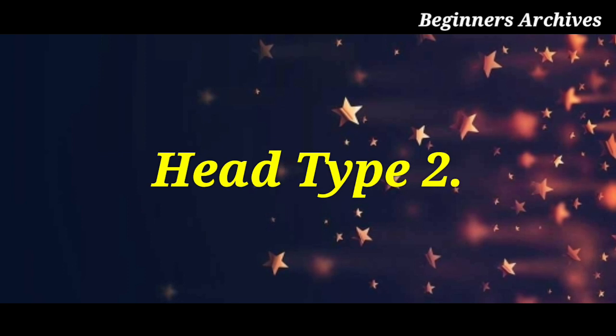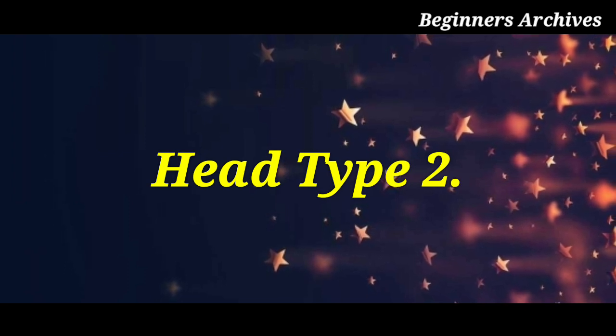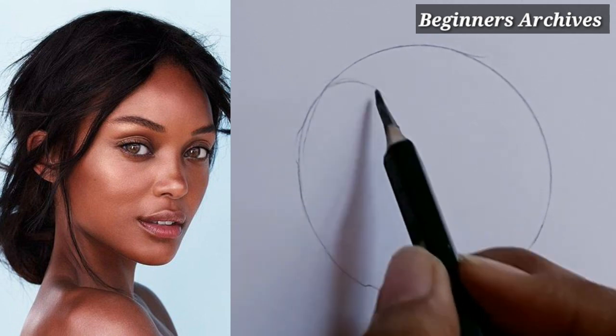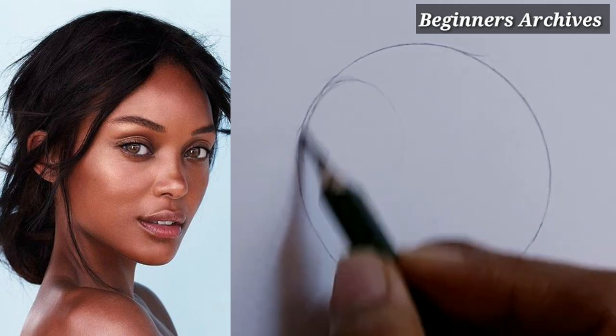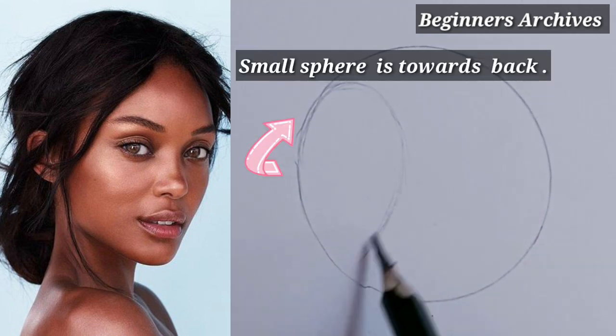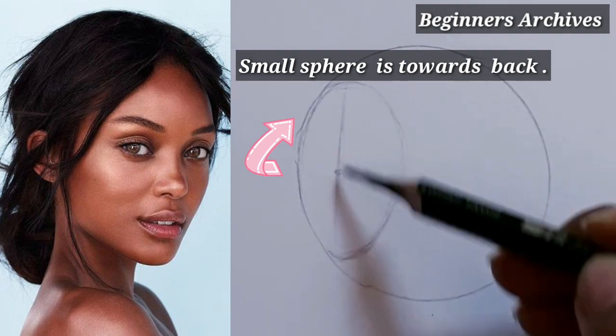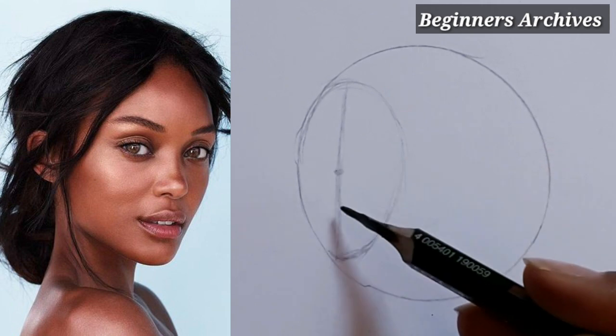After that, we will draw head type 2. Head type 2 is slightly turned to the front. The sphere is positioned differently with the middle line on the front and the corner on the back.